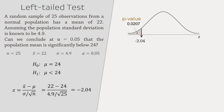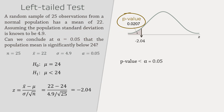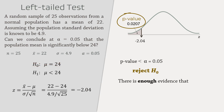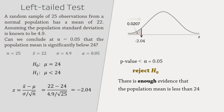But if we are testing at alpha equals 0.05, our p-value will be less than alpha, in which case we will reject the null hypothesis in support of the alternative. That is, we have enough evidence to conclude that the population mean is less than 24 at alpha equals 0.05.